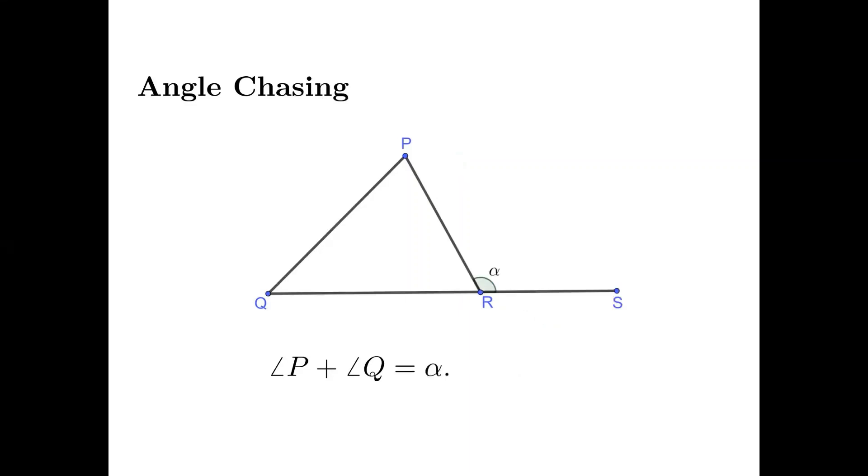Secondly, the so-called exterior angle theorem. The size of an exterior angle at a vertex of a triangle equals the sum of two remote interior angles.